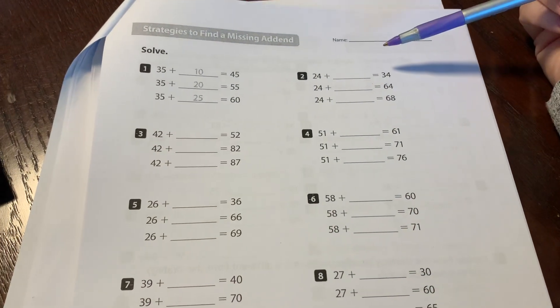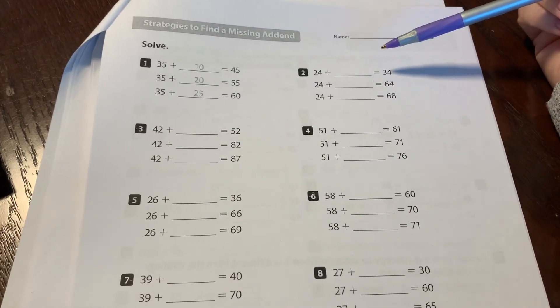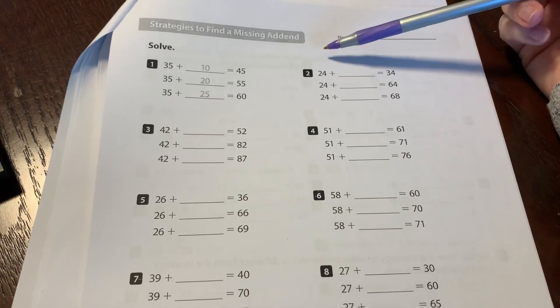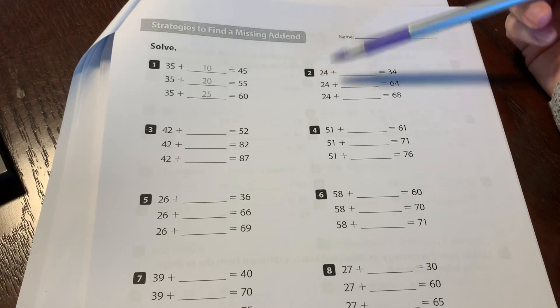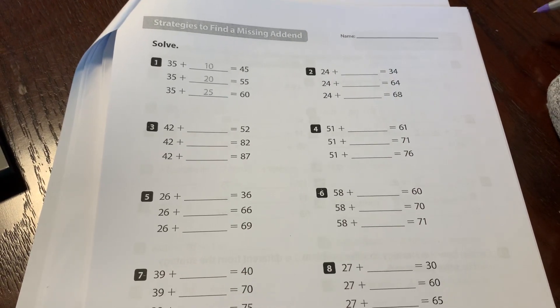Good morning boys and girls. Today is day seven. It's Tuesday and today for math you're going to be working on strategies to find a missing addend. This is pages 15 and 16. That's your work for today.